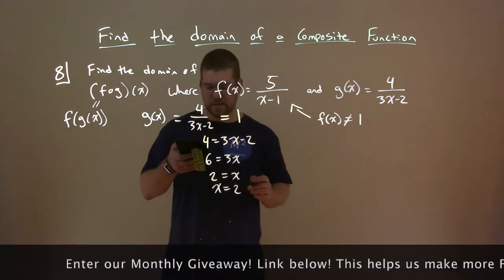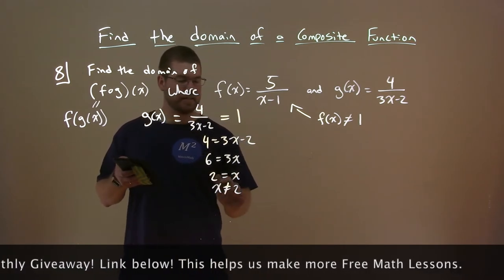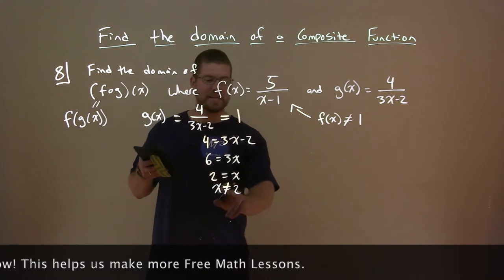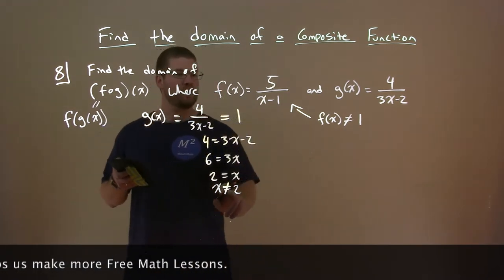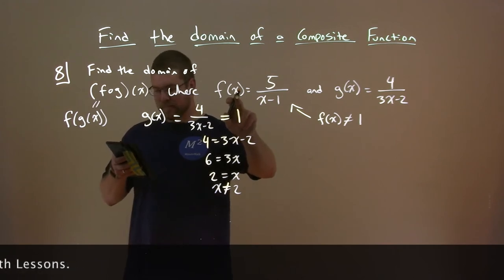So what they're telling us here is that x cannot equal 2 right there. x cannot equal 2 because 2 causes an error in the f of x function.